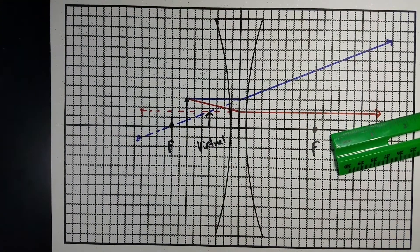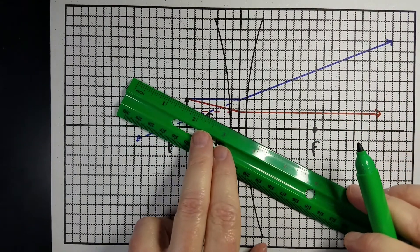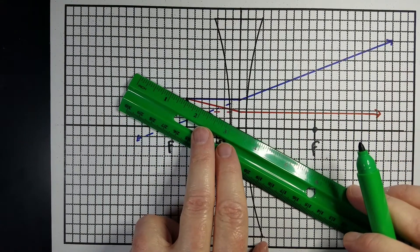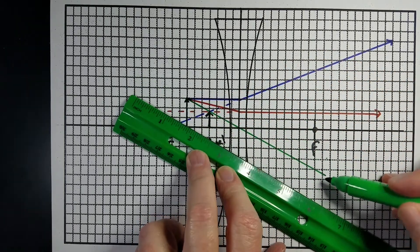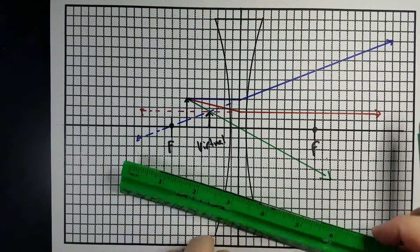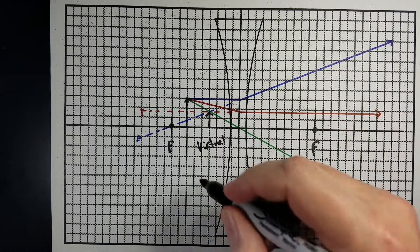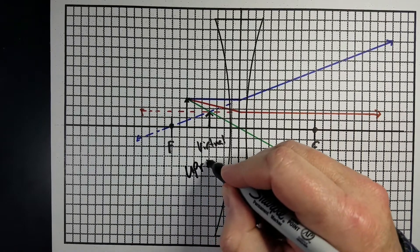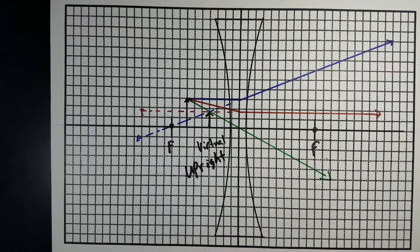And our third ray, again, goes right through the center of the lens from the top of our object. If we draw everything correctly, we all cross at the same point. And so that view of light is virtual, it's upright, and it is slightly smaller than our original object.